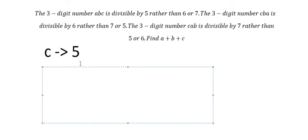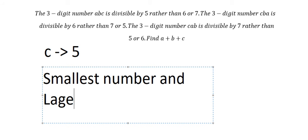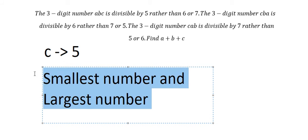CPA is divisible by 6, so we need to find numbers that can divide by 6. We know that B and A cannot be 5 or 0, because if they were 5 or 0, those digits would be divisible by both 5 and 6 together. So we need to find the smallest and largest numbers divisible by 6 without repeating 0 or 5.